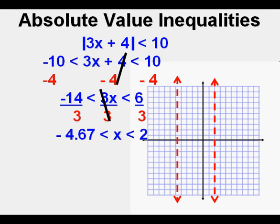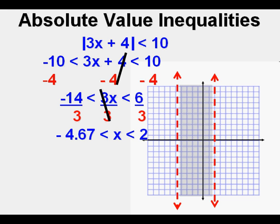We can also graph this absolute value inequality on a coordinate plane. We use dashed lines for boundary lines at x equals negative 4.67 and x equals 2. We shade in between the two dashed lines — the y value doesn't matter, it can range from negative infinity to positive infinity. It's the x values that are shaded.